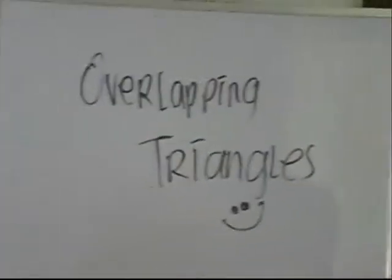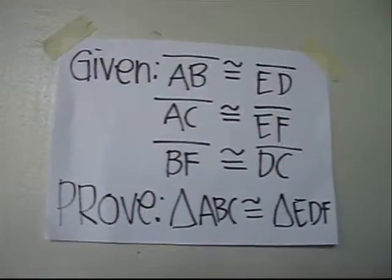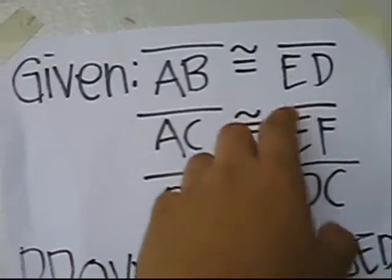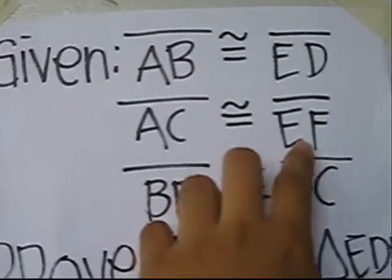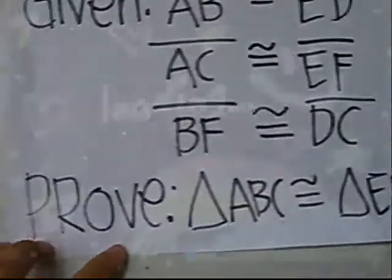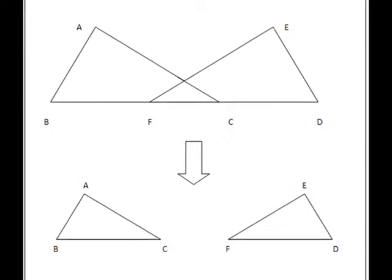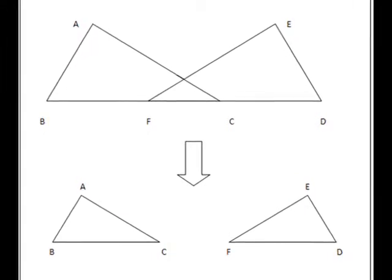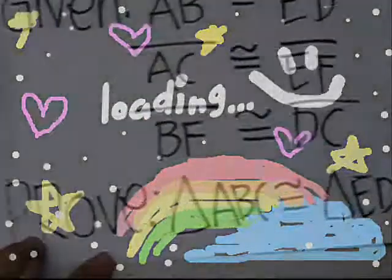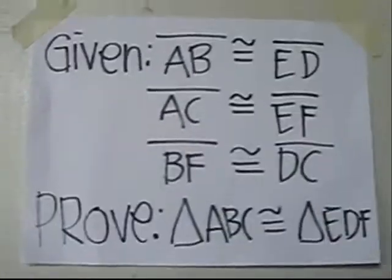We have here example number one. The given is: line AB is congruent to line ED, line AC is congruent to line EF, and line BF is congruent to line DC. Let us refer to the figures shown. Prove that triangle ABC is congruent to triangle EDF.